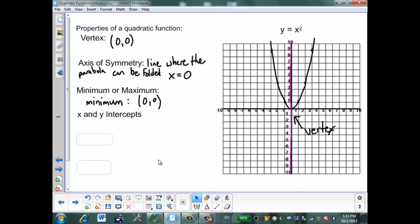The next property is the y and x intercepts. So the x intercepts are where it crosses the x axis. And in this case, it crosses the x axis at 0, 0. The y intercepts are where it crosses the y axis. And again, for this graph, that's going to be at 0, 0.